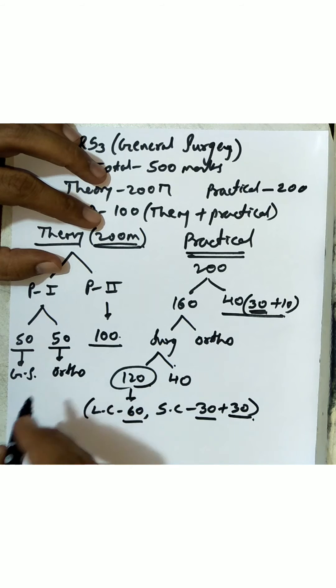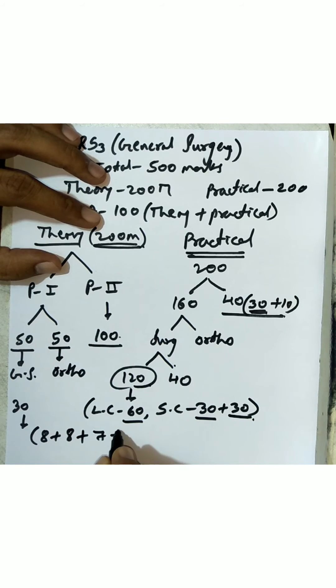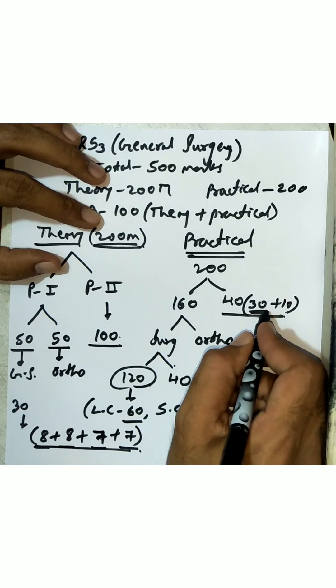You have 30 marks of viva voce in general surgery which is further split up into 8 plus 8 plus 7 plus 7, so that's 4 table vivas: instruments, specimens, x-rays, and procedures.